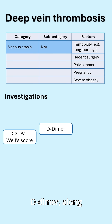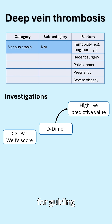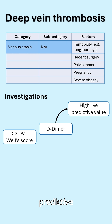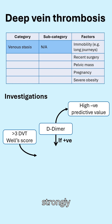Generally, a D-dimer along with a Wells score is used for guiding further investigations. Note the D-dimer has a high negative predictive value, meaning if it's negative, you can strongly exclude a DVT.